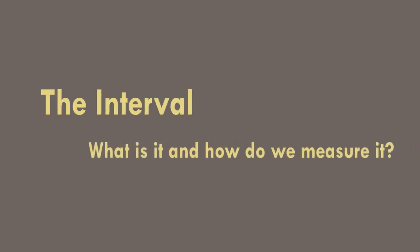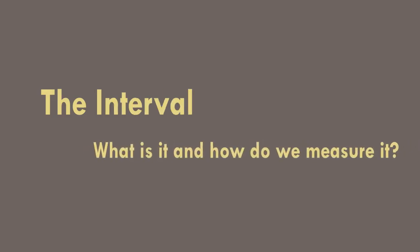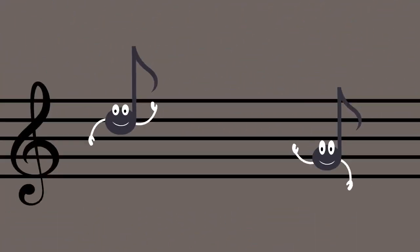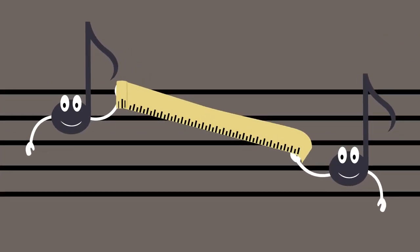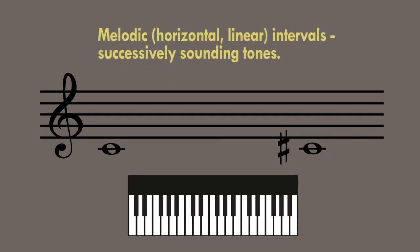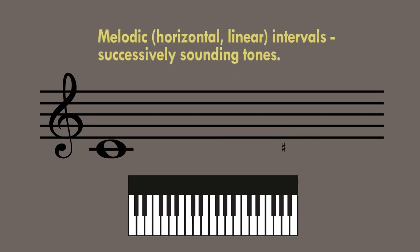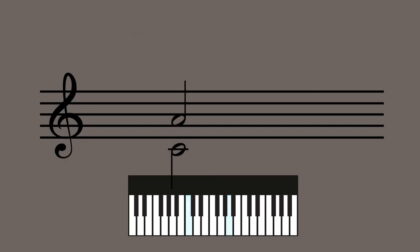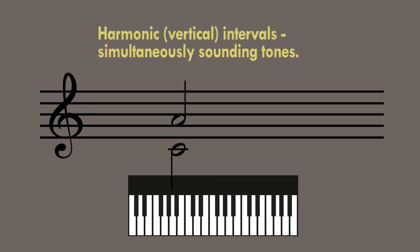The interval: what is it and how do we measure it? The interval is the space between two pitches. If the two tones sound one after the other, we speak of a melodic interval, and if they sound together at the same time, we call that a harmonic interval.